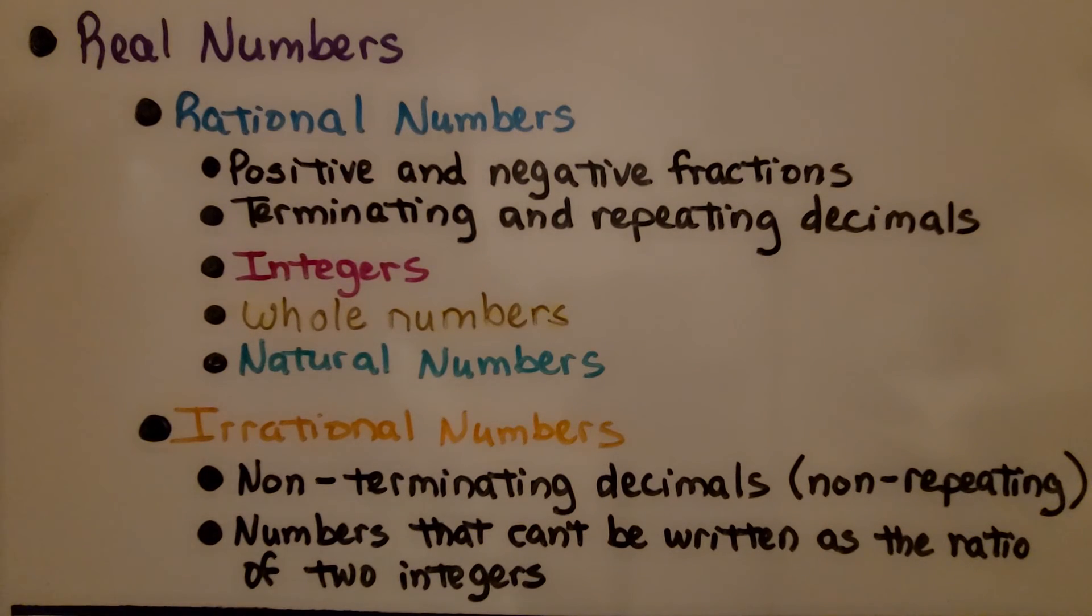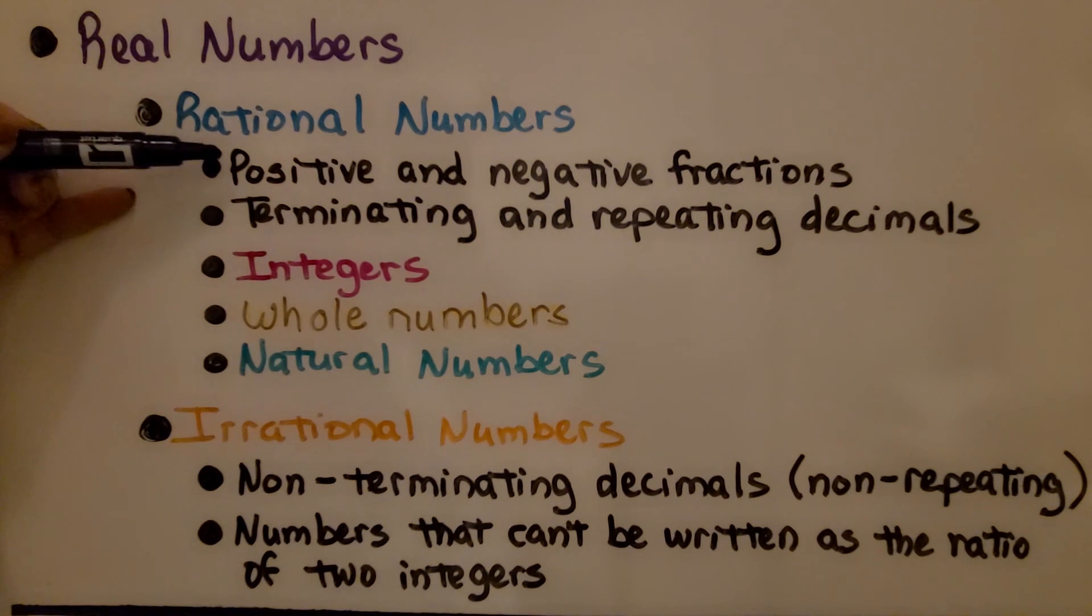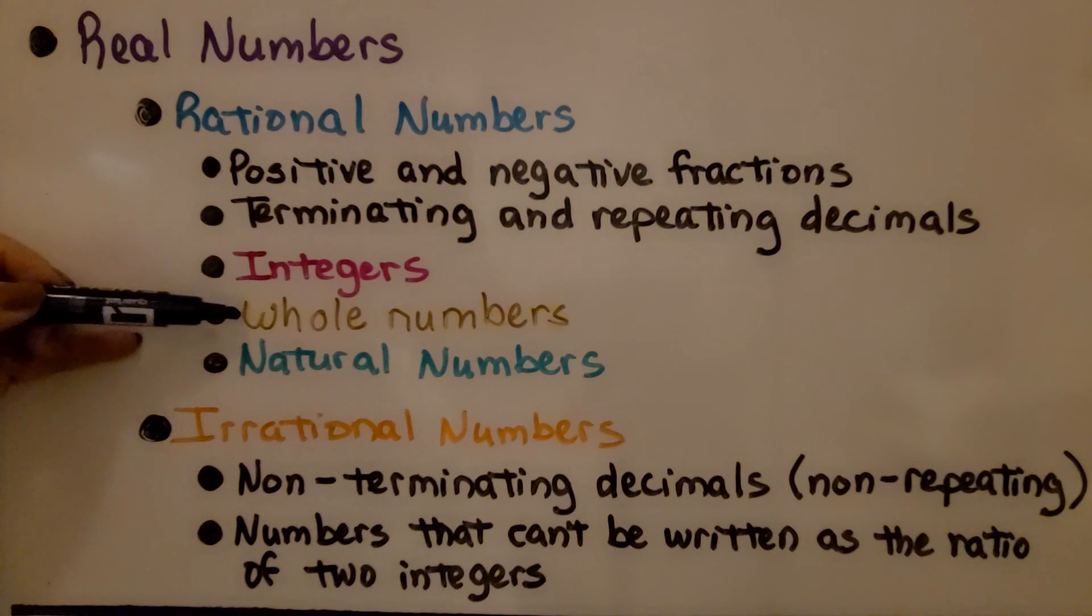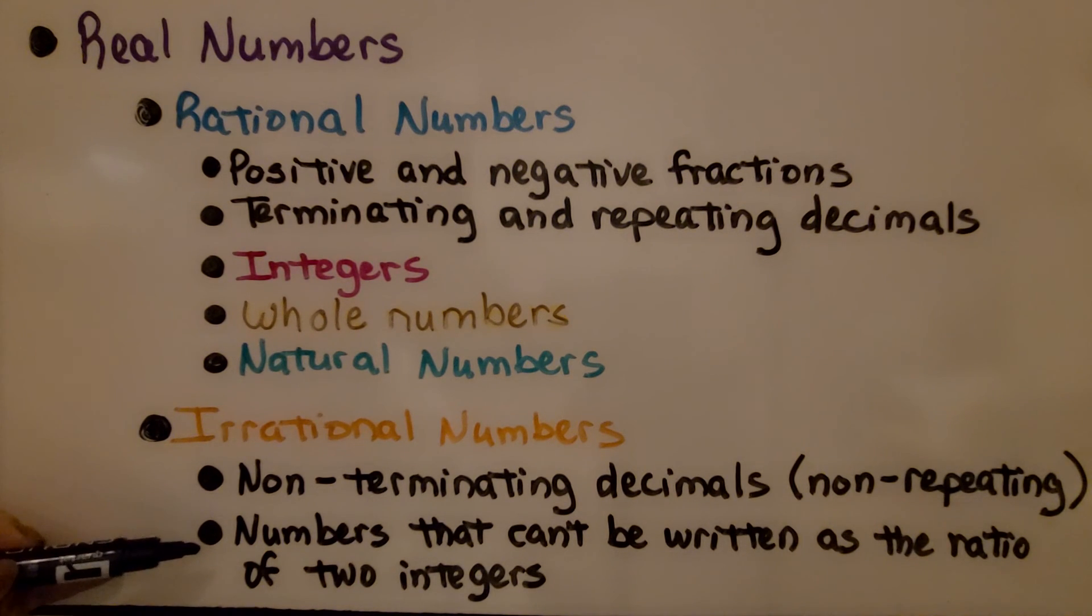So to wrap this up, real numbers include rational numbers and irrational numbers. Under the subset of rational numbers, we have positive and negative fractions, terminating and repeating decimals, integers, whole numbers, natural numbers. For irrational numbers, we have non-terminating decimals, that's non-repeating decimals, and we have numbers that can't be written as the ratio of two integers.